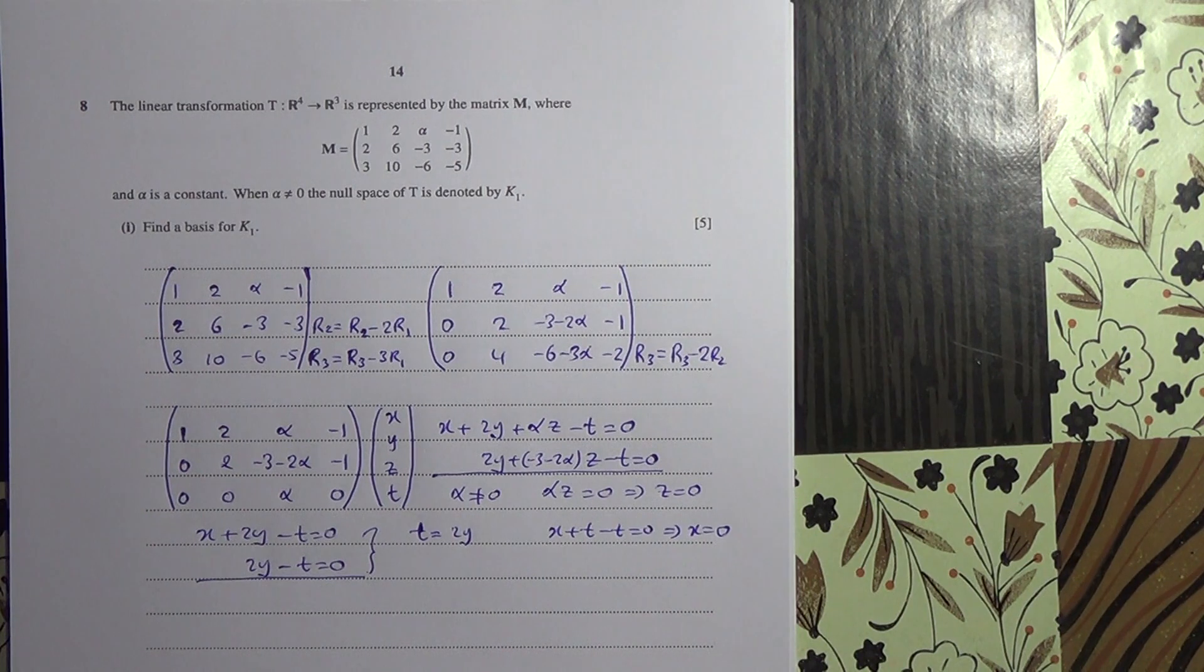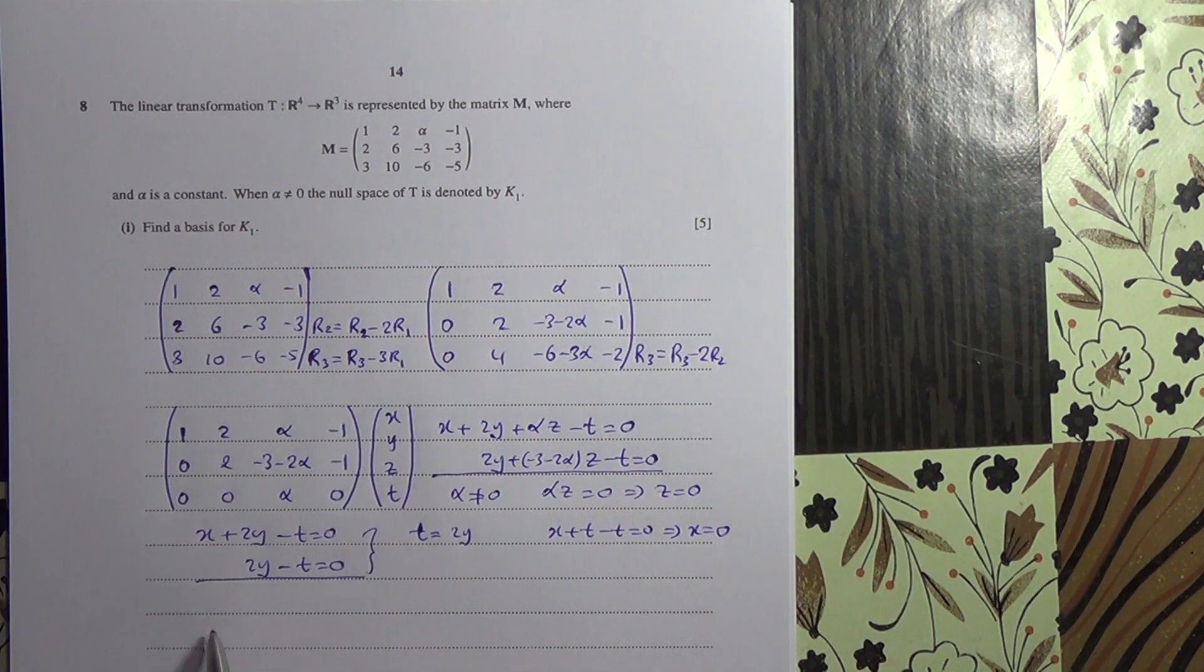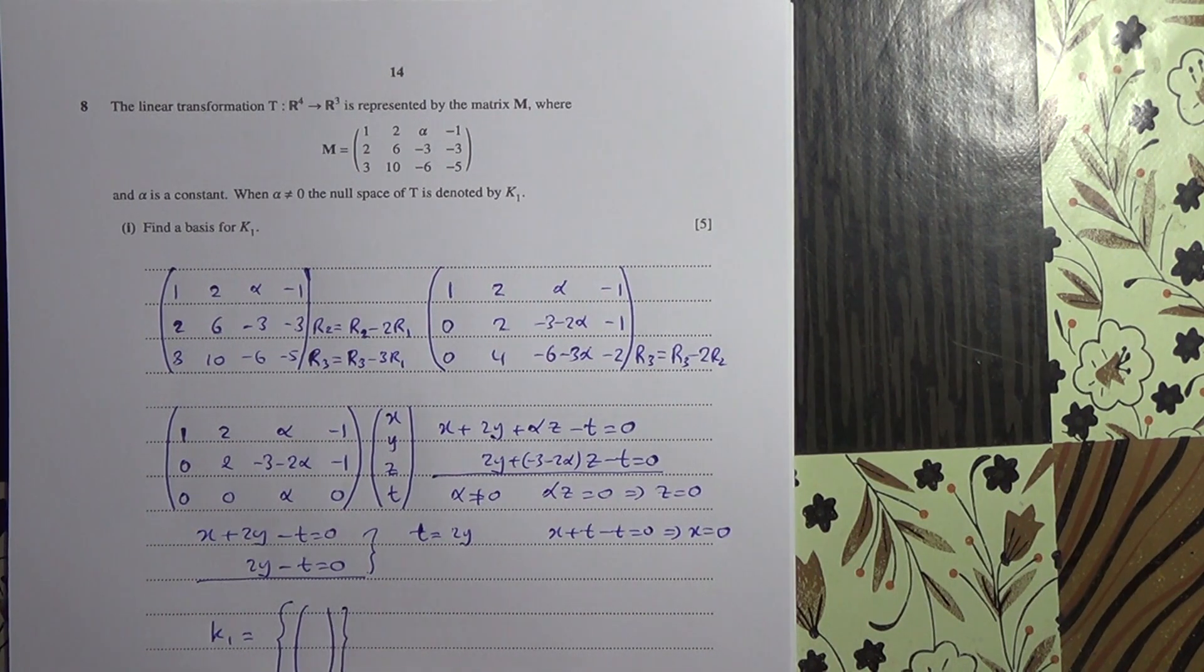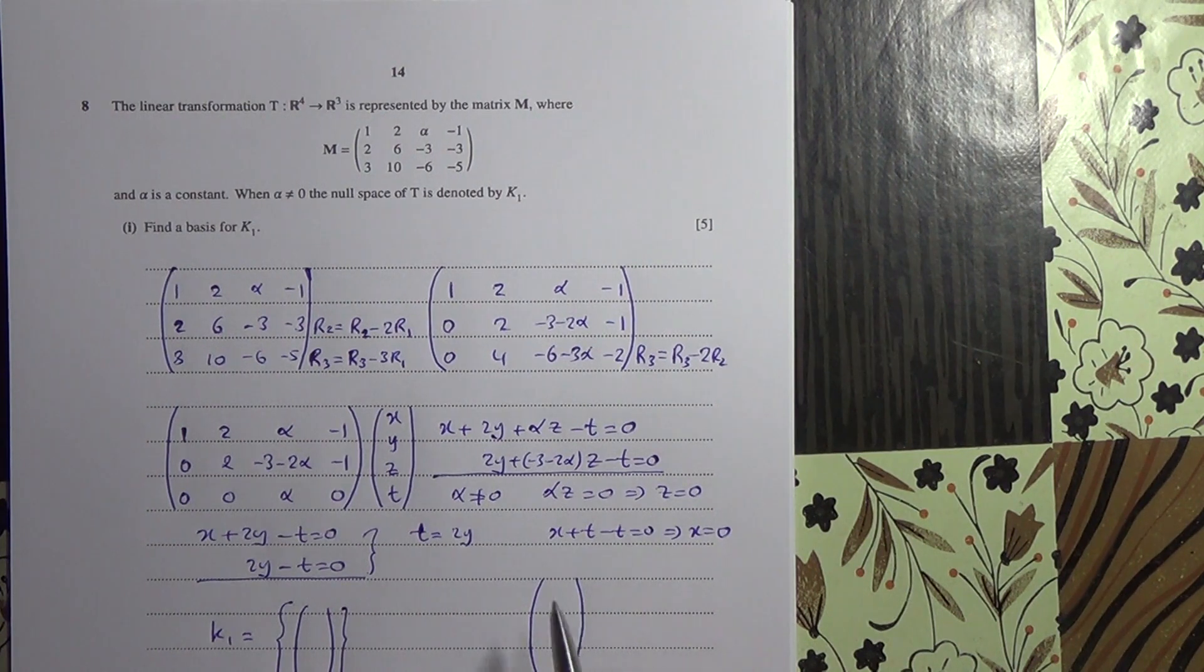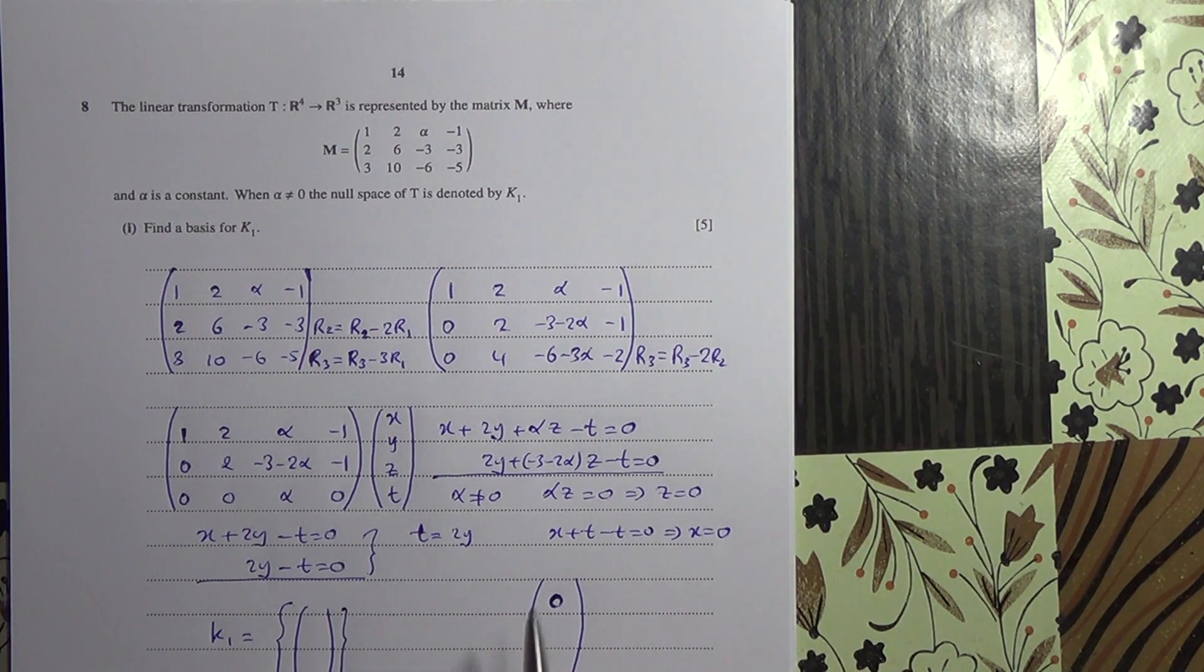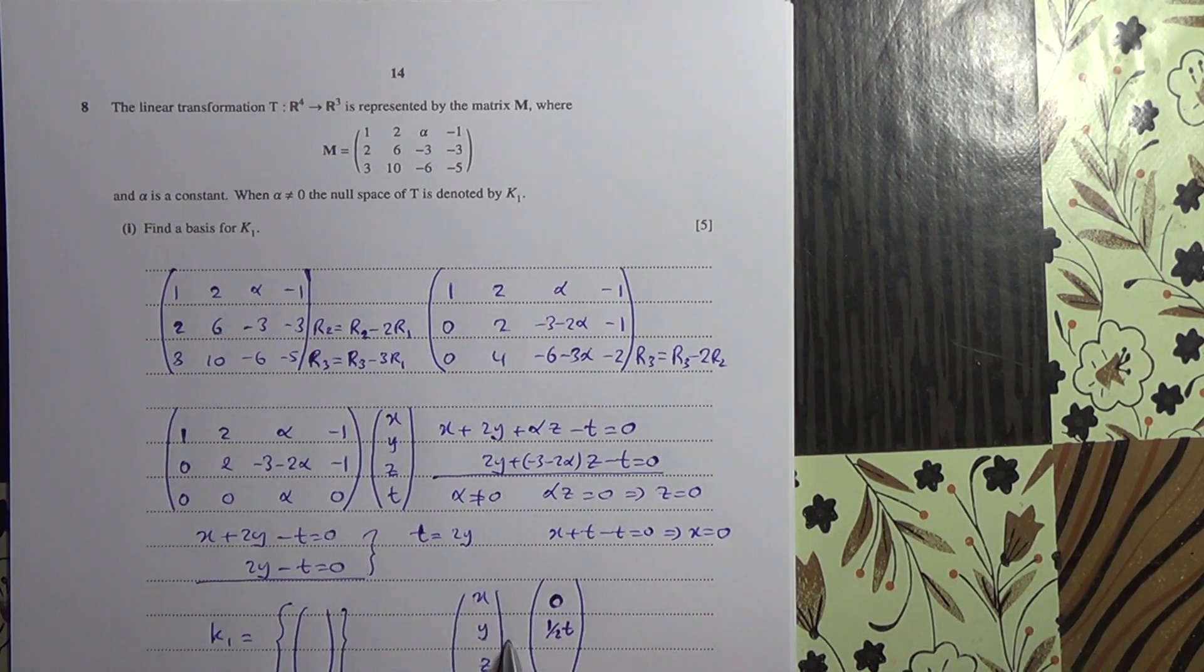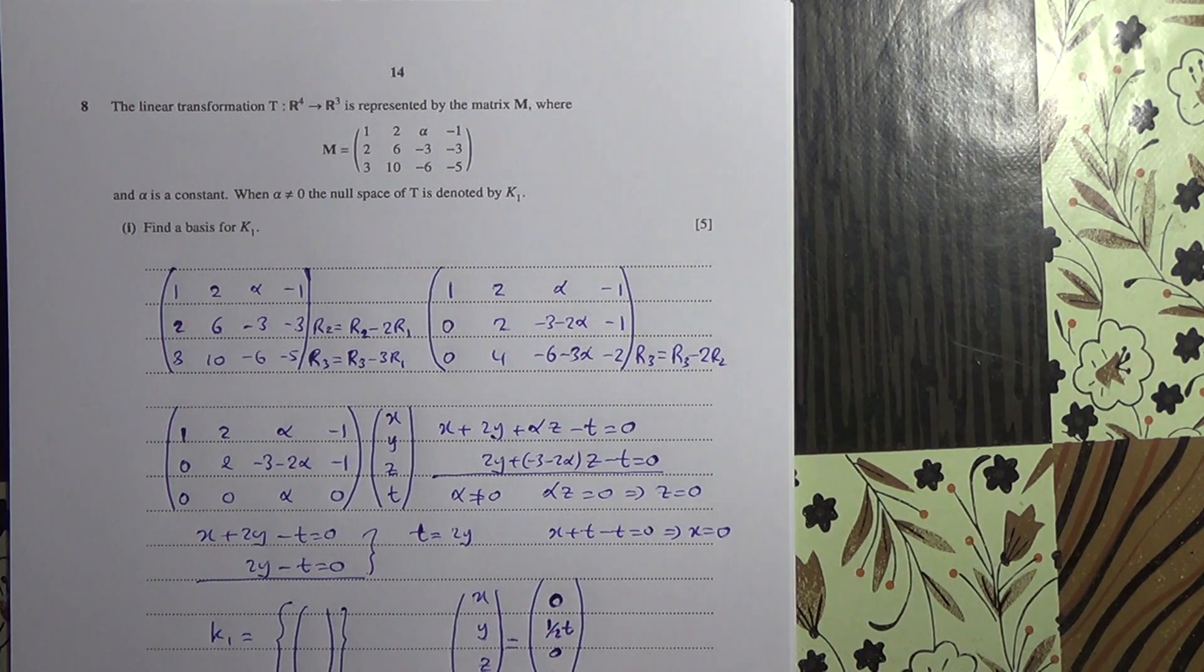So we have a situation here. So to find the basis for K, maybe we're going to do that later on here. But let us look at what we've got. What we've got is X is equal to 0, and then Y is equal to half T. So this is X, Y, Z, and then T. Because if you send the 2 there, it becomes divided. Y is equal to half T, Z is equal to 0, and T is equal to 2Y.